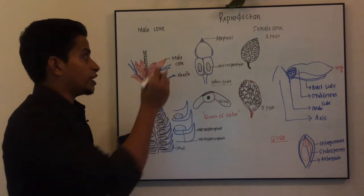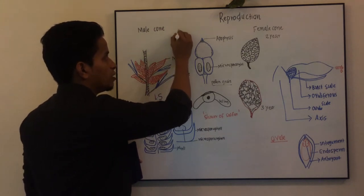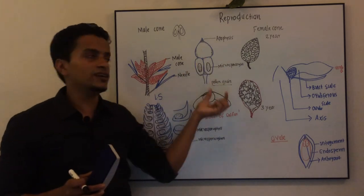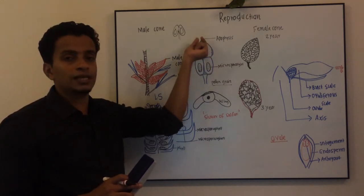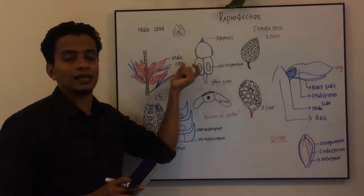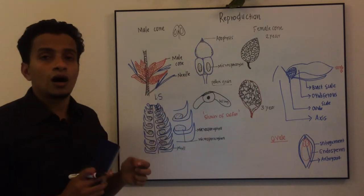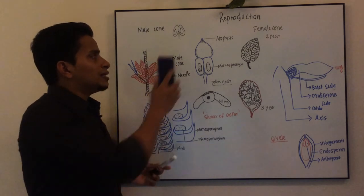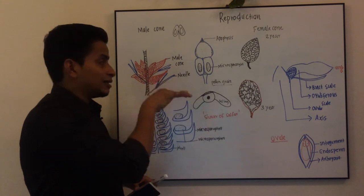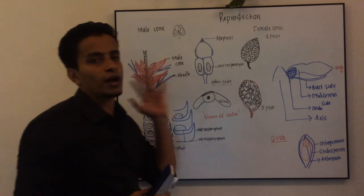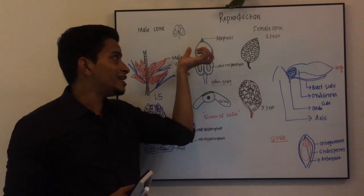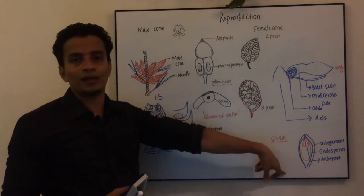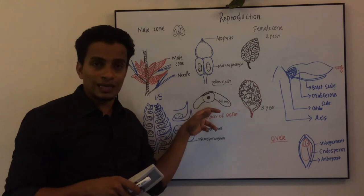The microsporangia are present on the lower side of the microsporophyll. Inside the microsporangia, you can see numerous microspores. If you look at this, you can see pollen grains. The pollen grain is produced inside the microsporangia.